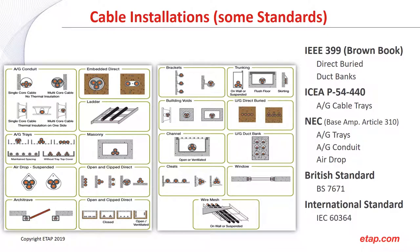We've had a chance to go over some of these installations. The standards used around the world include: IEEE 399 brown book, which covers direct buried and duct banks; ICEA P54-440, commonly used for above-ground cable trays; the National Electric Code (NEC), which provides installation tables for above-ground trays, conduits, and air drop. For IEC users there is the British Standard BS 7671 and the international standard IEC 6364.